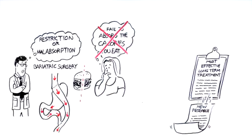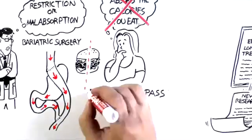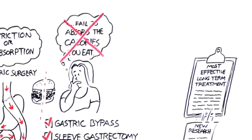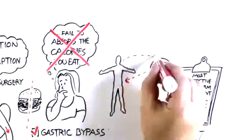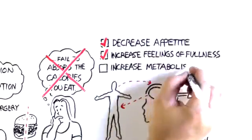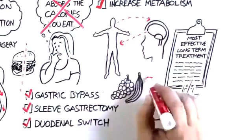But new research suggests that certain types of bariatric surgery, for example gastric bypass, sleeve gastrectomy, and duodenal switch, affect the signals between the brain and the body to decrease appetite, increase feelings of fullness, increase metabolism, and even encourage preferences for healthier food.